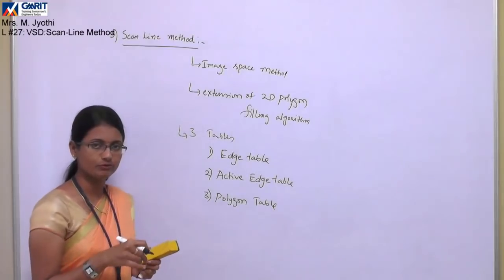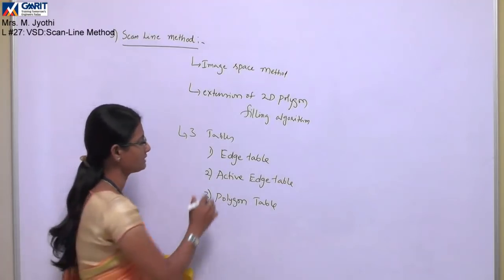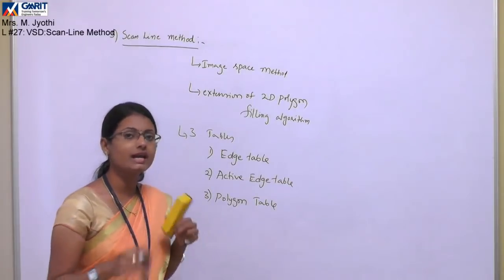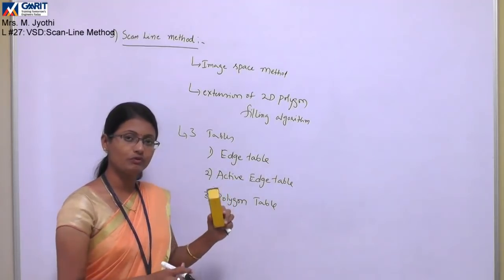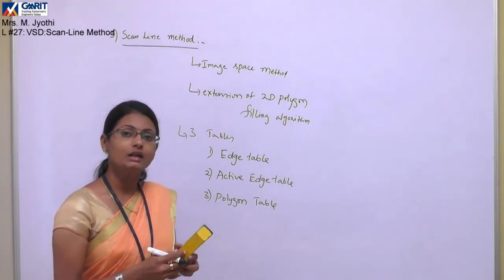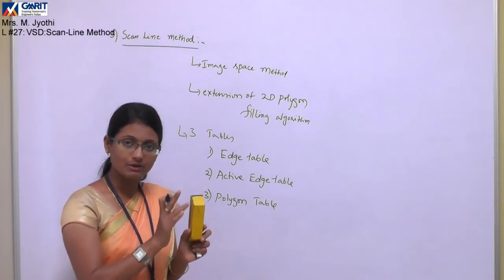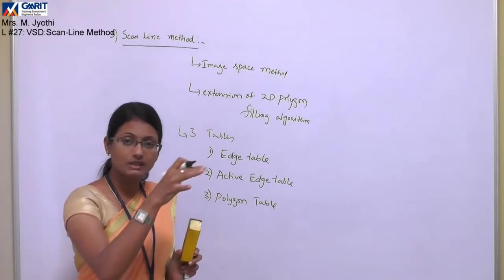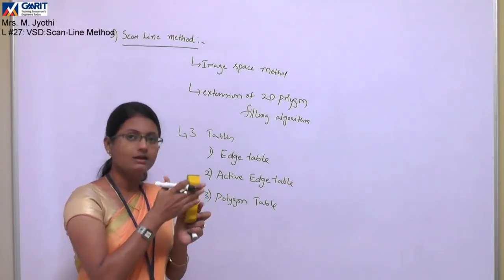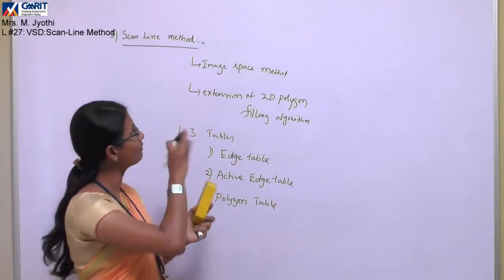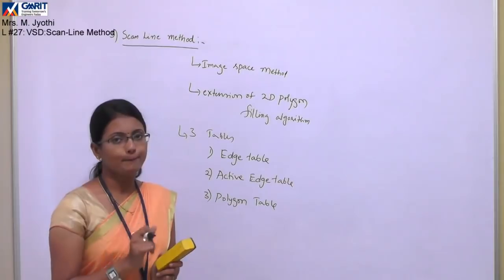These three tables are required to store some information, and by using that information we will find the visible surfaces of any object. The edge table stores the edge information of all the polygons we are considering. Remember, before applying this scan line method, we need to perform some pre-processing where we remove the hidden surfaces — that is, the back faces — using the back-face detection method discussed in our previous video. Only then do we consider the visible surfaces and apply this algorithm on them.